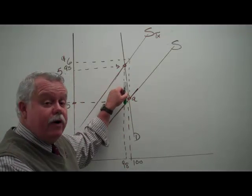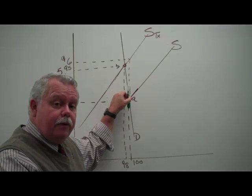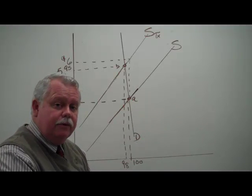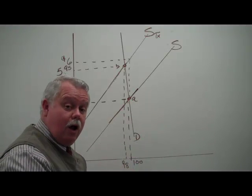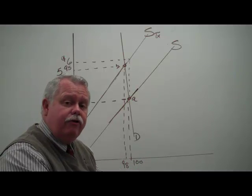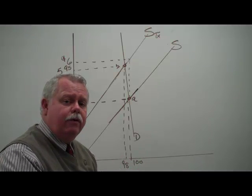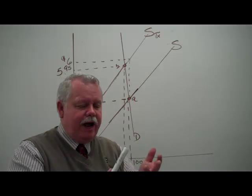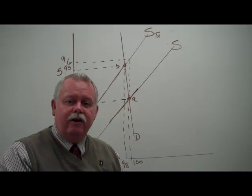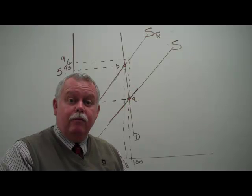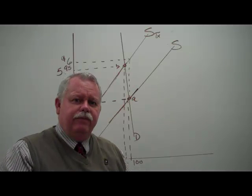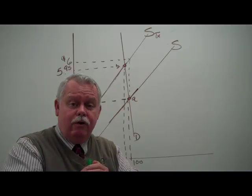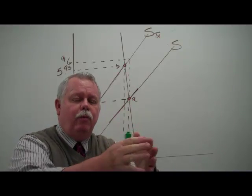When the demand curve is very inelastic, the seller is able to pass along most of the tax. The buyers continue to buy a lot of the product, and the government tends to collect more tax revenue. That's why we talk about sin taxes — we tax liquor, cigarettes, gasoline — because people have got to have them. Things they want, they've got to have. That's what government knows they can tax, and people will pony up the money.